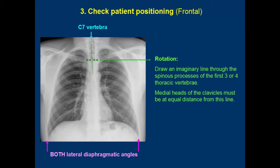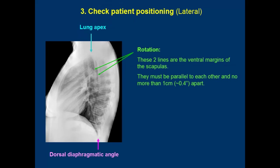3. Check patient positioning. On the frontal image you should see the last cervical vertebra at the top edge and both lateral diaphragmatic angles at the bottom. 4. To verify rotation, draw an imaginary line joining the spinous processes of the first three or four vertebras; the medial heads of the clavicles must be at equal distance from this line. On the lateral image you must see the pulmonary apex a few centimeters below the top edge of the film and the dorsal diaphragmatic angle above the bottom. For rotation, look at the ventral margins of the scapulas — they must be parallel to each other and no more than one centimeter apart.